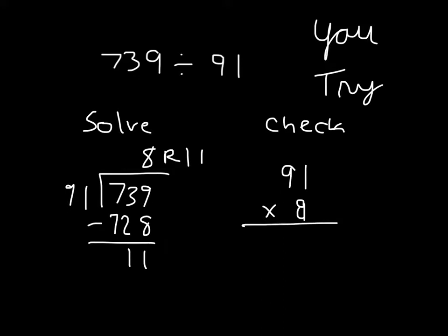Which was 8. 8 times 1 is 8. 8 times 9 is 72. 728. Add back in our remainder, which was 11. So we get 739. And that does check.